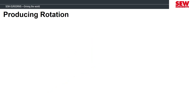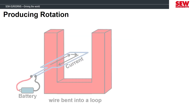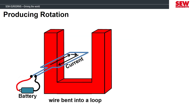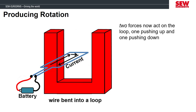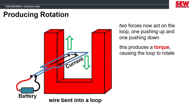Now if we want to produce rotation, which will be a lot more useful, we have to change our experiment. We will take the wire and bend it in a loop, and the whole loop needs to be inside the horseshoe magnetic field. Doing this results in two opposite current flows in the same magnetic field, so one direction of current will push the loop down and the other direction will push the loop up. These forces produce torque because the loop is wanting to rotate.